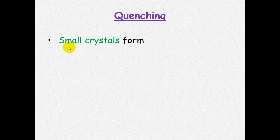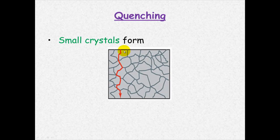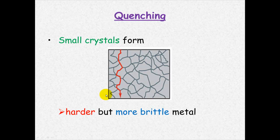What happens here is that small crystals form. Small crystals will make your metal harder, but it will also make it more brittle because these cracks can form very quickly and easily across the metal.